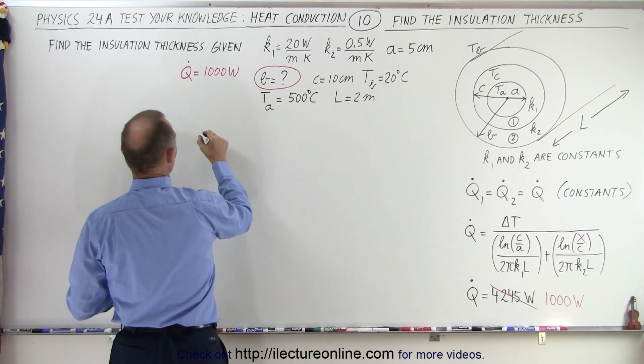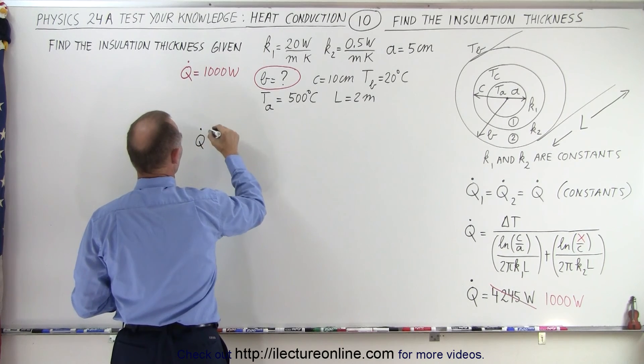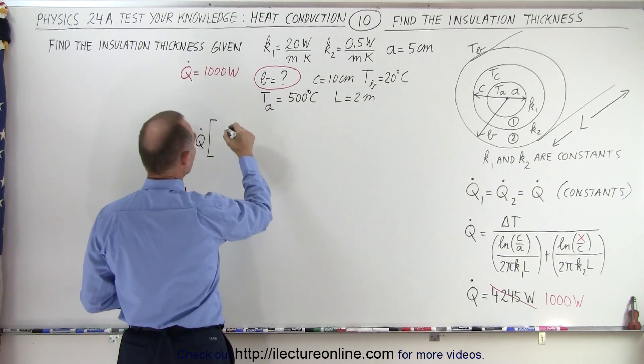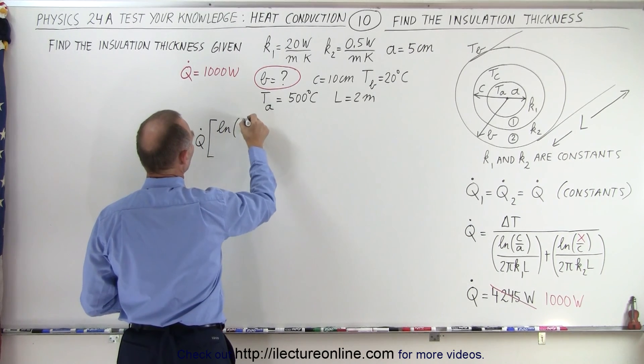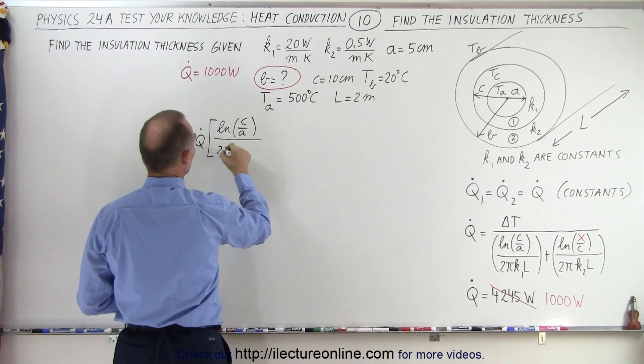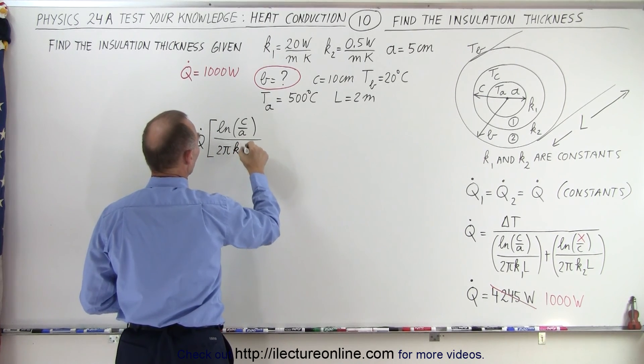We end up with q dot multiplied times, let's see here, that would be the natural log of c over a divided by 2 pi k1 l.